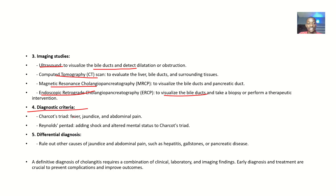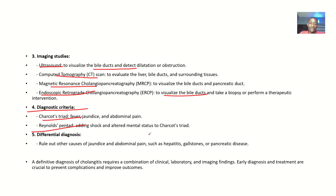Regarding diagnostic criteria: Charcot's triad involves fever, jaundice, and right upper quadrant abdominal pain. Reynolds' pentad is like Charcot's triad but you also see hypotension or shock, and confusion or altered mental status.